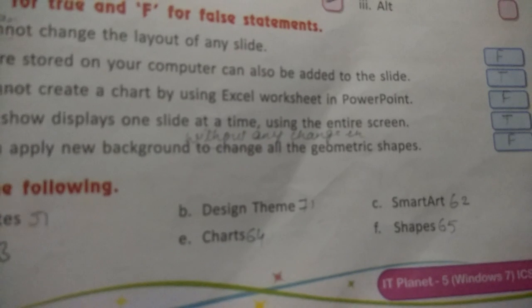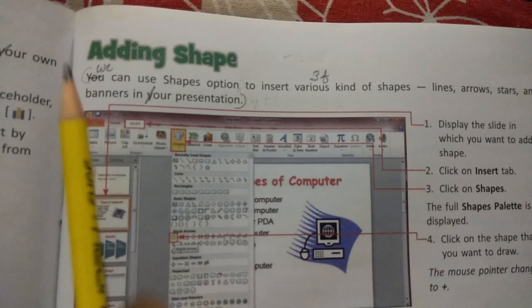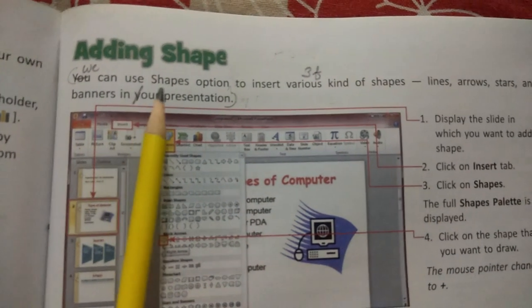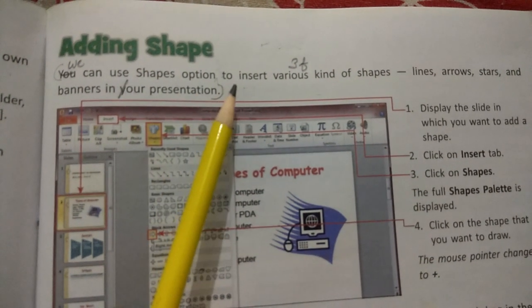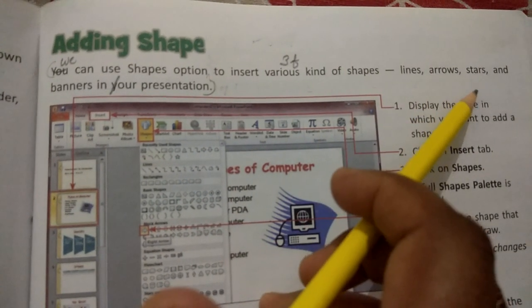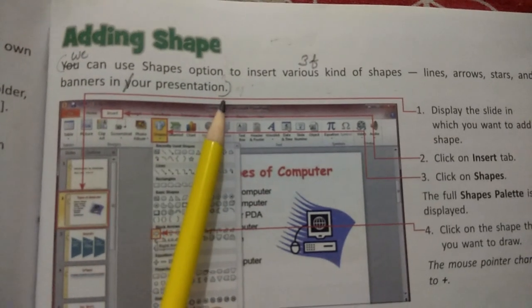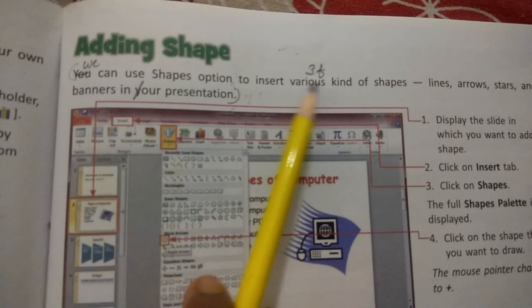For F answer, take out page number 65. Cut 'you' and write 'we'. We can use shapes option to insert various kinds of shapes, line, arrows, stars, and banners in our presentation. This is answer 3F.